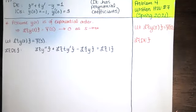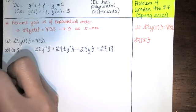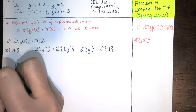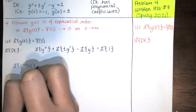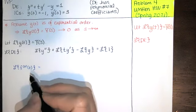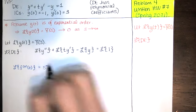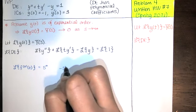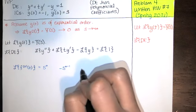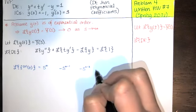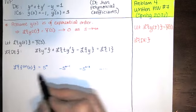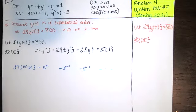To take the Laplace transform of Y double prime, we need to remember the rule for the Laplace transform of the nth derivative. We always have n plus one terms: the first term starts with S to the n, then negative S to the n minus one, and so on, with powers of S decreasing until we reach S to the zero — which is just one, so we typically don't write it.